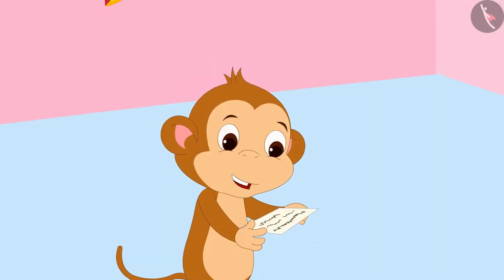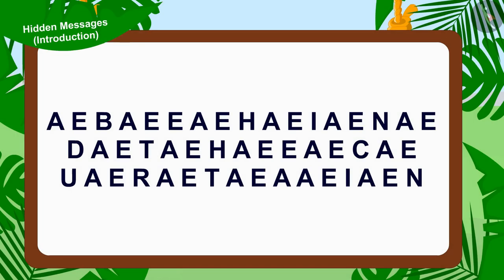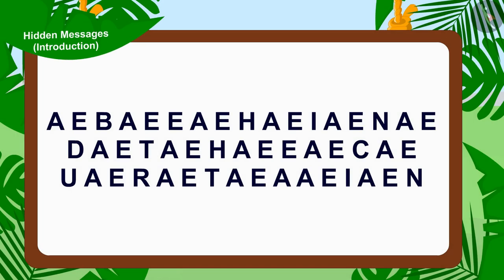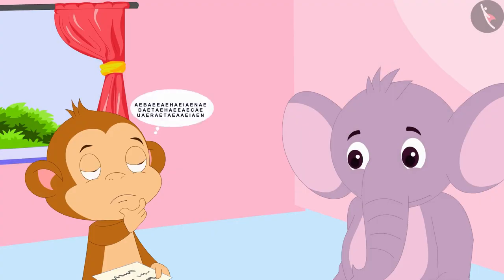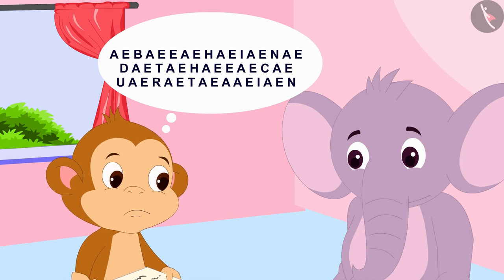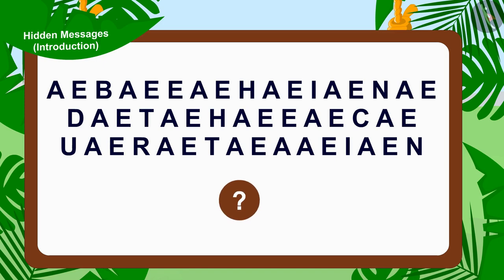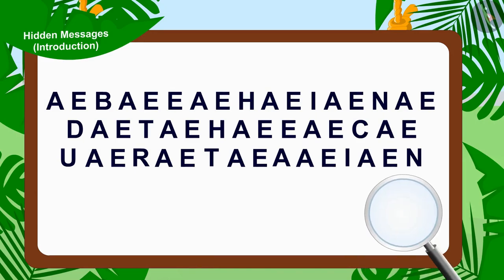When Baban opened the first letter, he found something like this written in it. Baban could not understand anything. Baban started thinking, I can't understand clearly what is written using these alphabets. Children, do you understand the clue written in Appu's letter? Come, let's see Appu's first letter carefully.